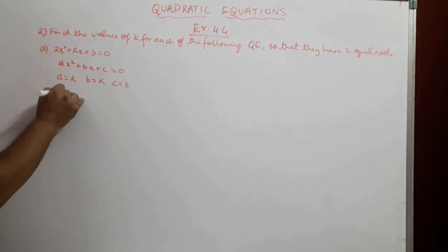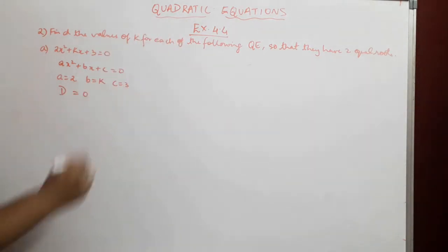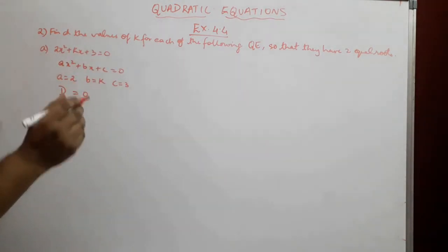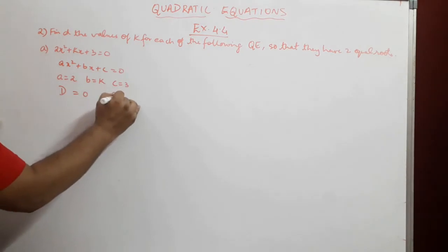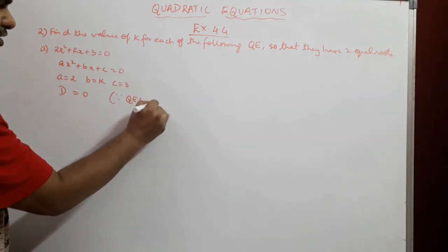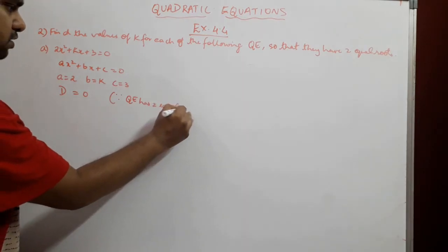Now, it says discriminant is equal to 0 as per the question. It has two equal roots. It only has two equal roots when discriminant is equal to 0. You can say since quadratic equation has two equal roots.